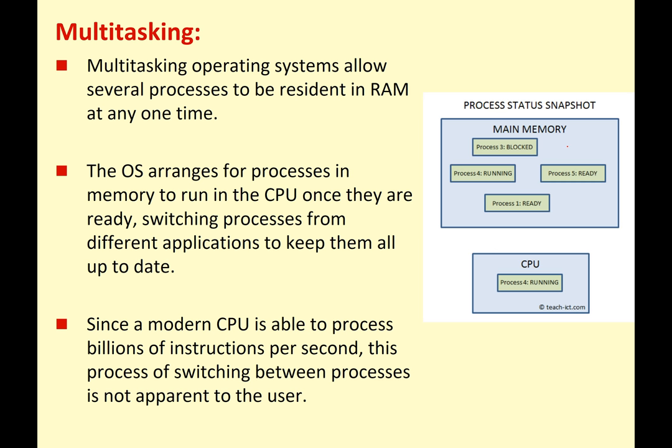Multitasking operating systems allow several processes to be resident in RAM at any one time. We've been running lots of different applications and they've all been transferred from our secondary storage, for example our hard disk, into our main memory, our RAM. The operating system then arranges for these processes in memory to run in the CPU once they're ready, switching processes from different applications to keep them all up to date.